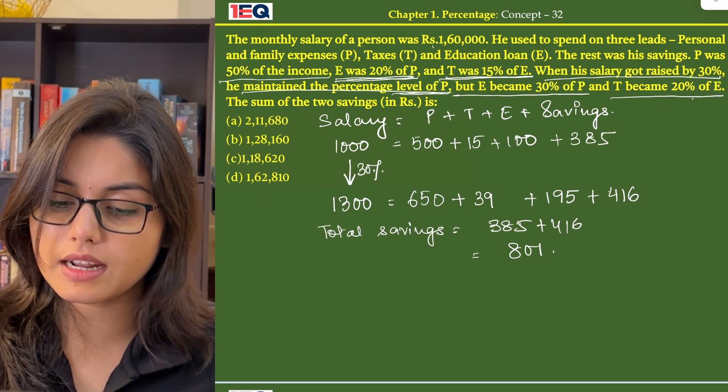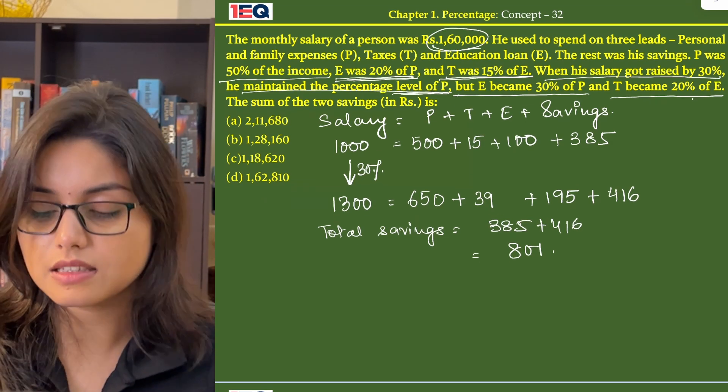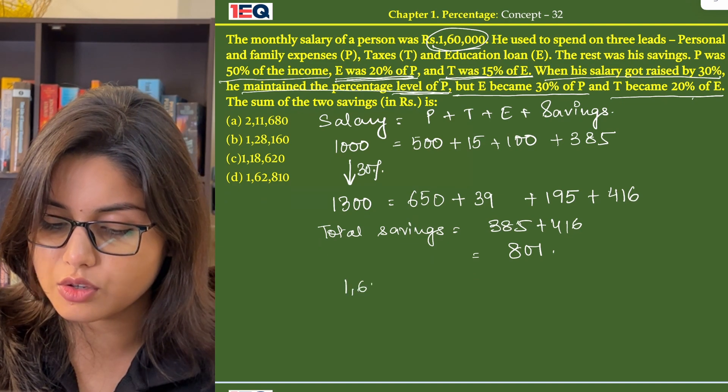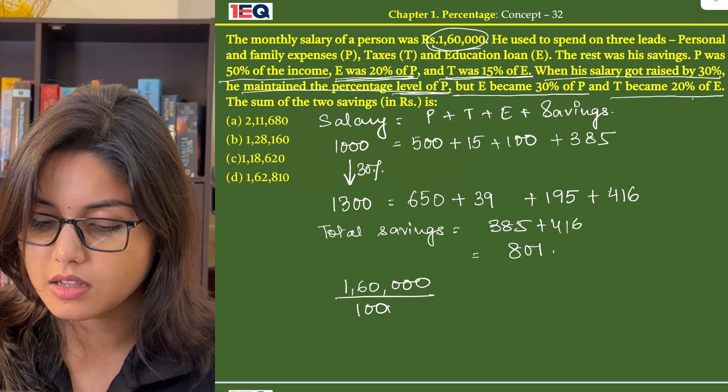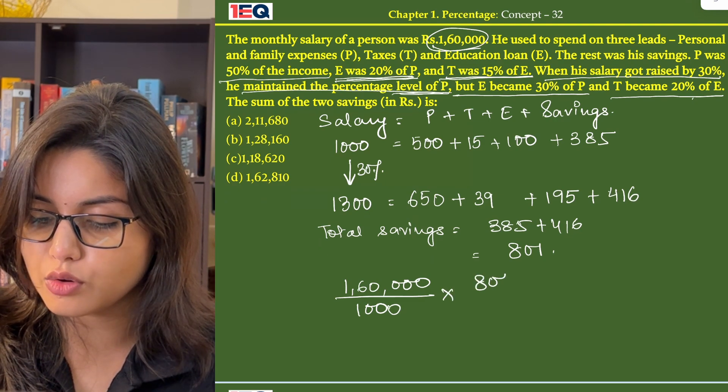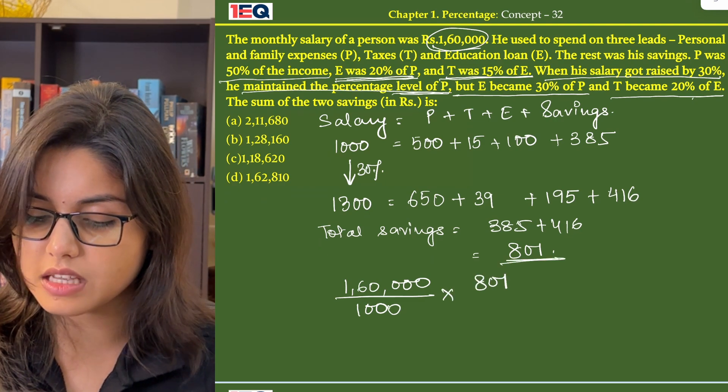Now coming back to 1,60,000. 1,60,000 was the value of our assumed salary or income that is 1000. And we need to find the value of our savings that is 801.